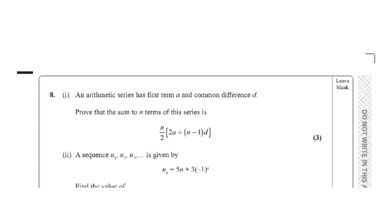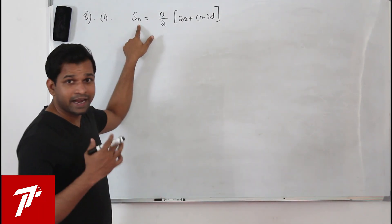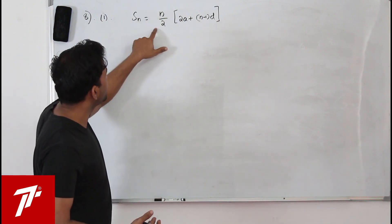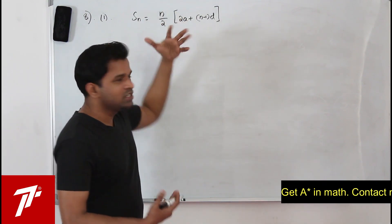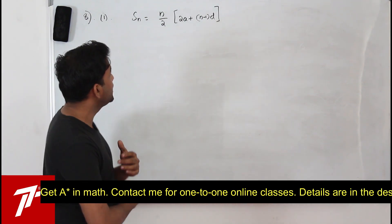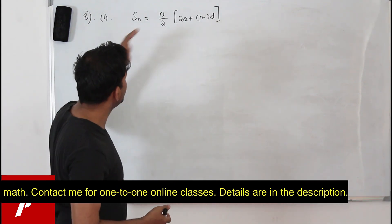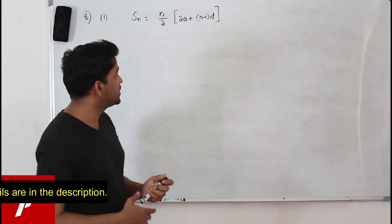Question number 8. An arithmetic series has first term a and common difference d. Prove that the sum of the n terms of this series is n upon 2 into 2a plus n minus 1 into d. We need to prove that formula for the sum of n terms of an arithmetic sequence, using the general arithmetic sequence.